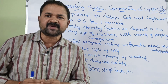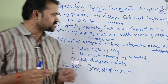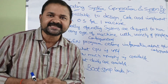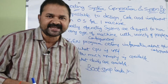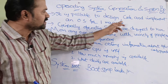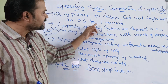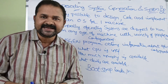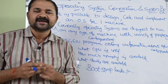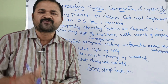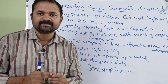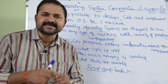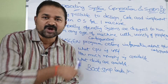Let us discuss two simple concepts: operating system generation and system boot. First, let us see about operating system generation. It is possible to design, code, and implement an operating system for one machine. We can generate an operating system for the requirement of a single machine, but we can use that operating system only on that machine. Because the operating system was generated based on the requirement of that machine.